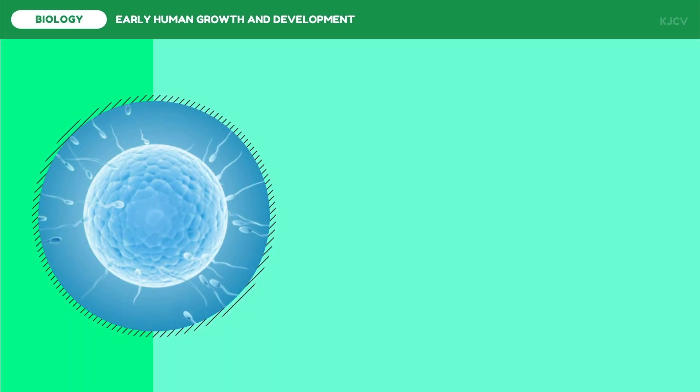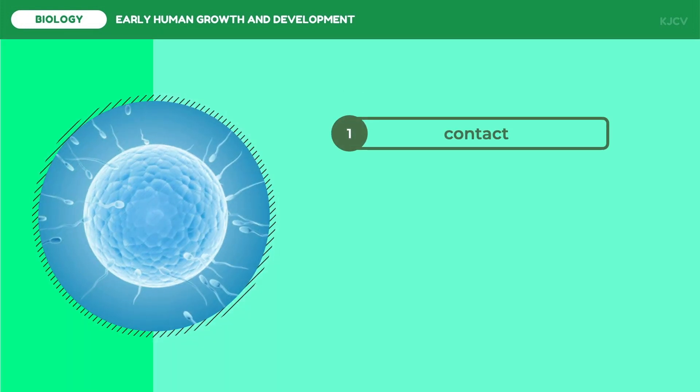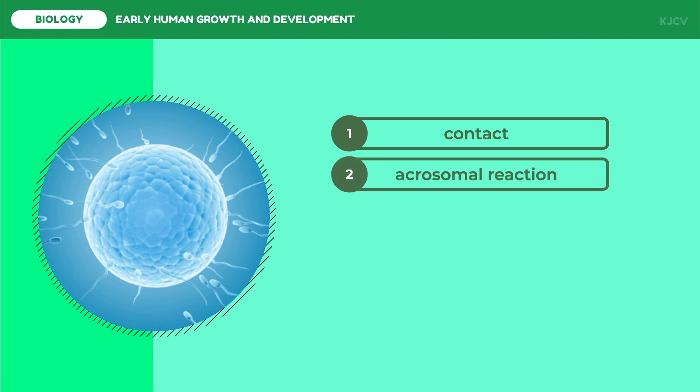The fertilization process can be simplified into five steps. The first step is contact, when the sperm penetrates the corona radiata. This is followed by the acrosomal reaction. The zona pellucida protects the egg cell from polyspermy, or multiple sperm penetration. In the acrosomal reaction, the acrosome secretes enzymes to degrade a portion of the zona pellucida so the sperm cell can enter.